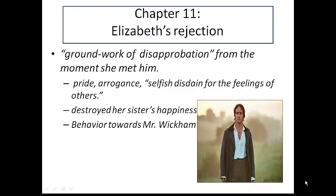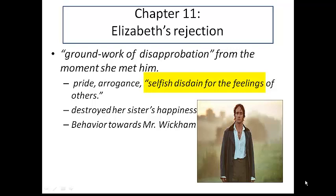So why would Elizabeth reject the proposal from Mr. Darcy? She explains that the specific aspects of Mr. Darcy's character formed what she called the groundwork of disprobation. From the moment she met him, she is referring primarily to Mr. Darcy's pride, his arrogance, and what she refers to as "selfish disdain from the feeling of others."